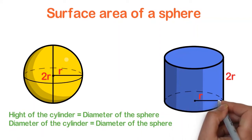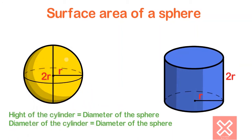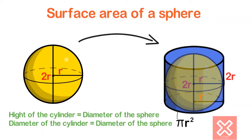This cylinder also has radius R, and the height equals the diameter of the sphere, which is 2R. This type of cylinder, where the diameter of the sphere equals the height of the cylinder and the radius is the same as the sphere, is called a circumscribing cylinder.